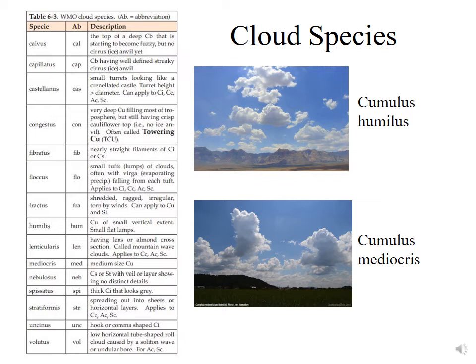For example, we have a cloud genre, and then we have cloud species. Table 6.3 shows the World Meteorological Organization cloud species in alphabetical order. You can read through what each one of these actually corresponds to, but I'll give you some examples.